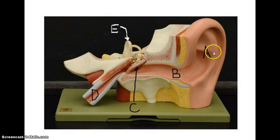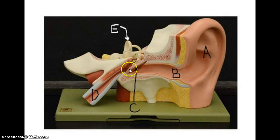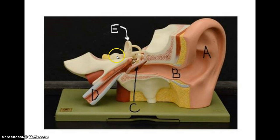Out here you have the auricle or the pinna, you have the external auditory canal, and you have the tympanic membrane. You can also see the auditory ossicles, the semicircular canals, a part of the cochlea, the vestibular cochlear nerve, as well as the auditory tube.